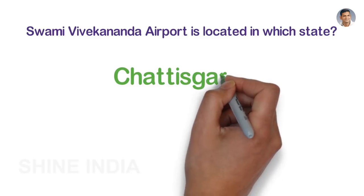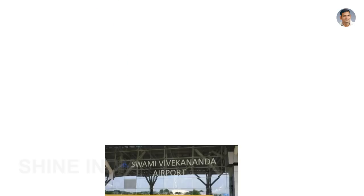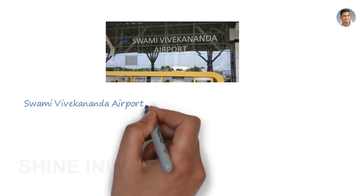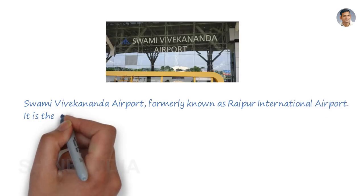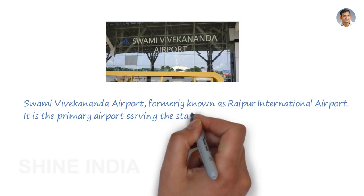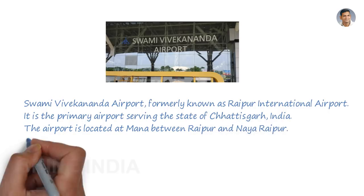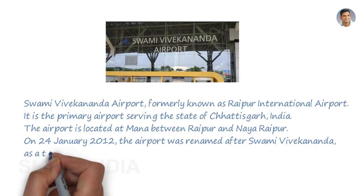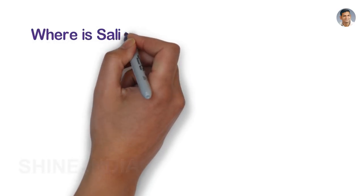Swami Vivekananda Airport is located in Chhattisgarh. Formerly known as Raipur International Airport, it is the primary airport serving the state of Chhattisgarh, India. The airport is located at Mana, between Raipur and Naya Raipur. On 24 January 2012, the airport was renamed after Swami Vivekananda as a tribute to the popular saint who spent two of his teenage years in Raipur.